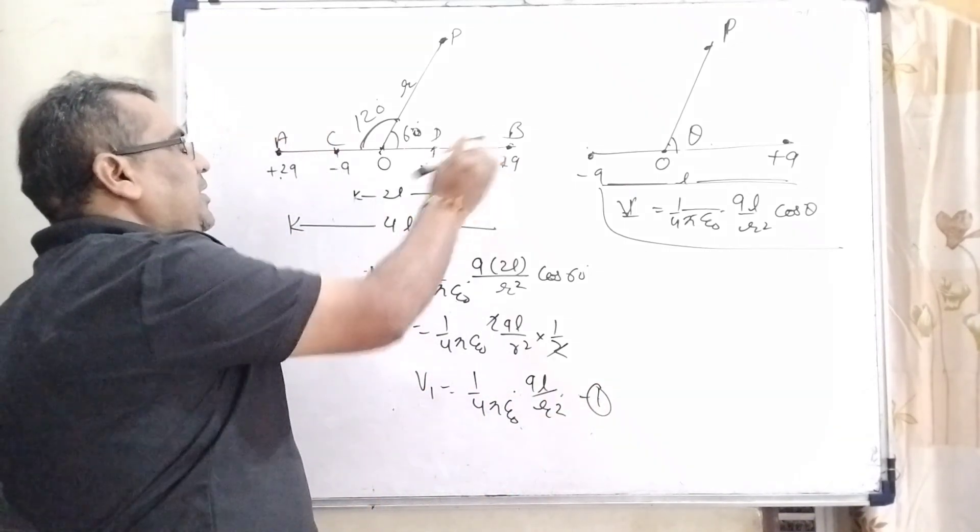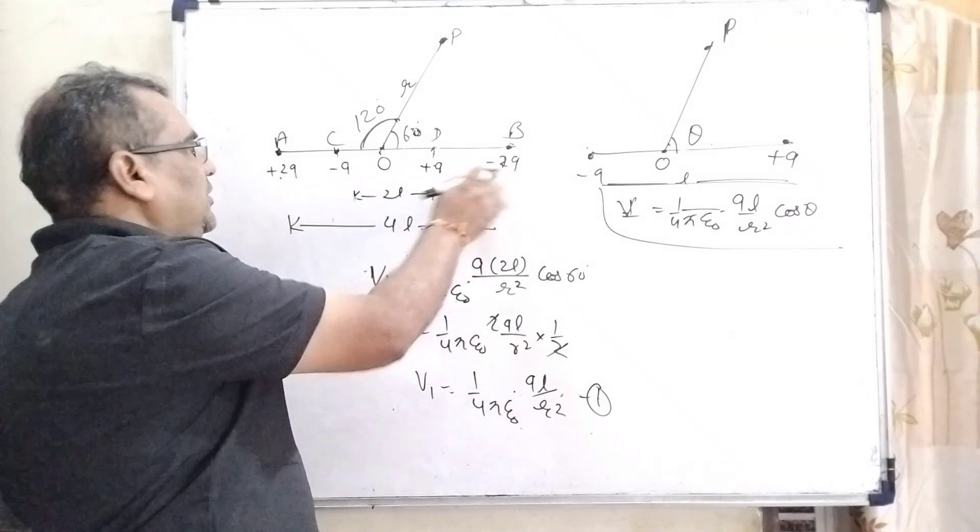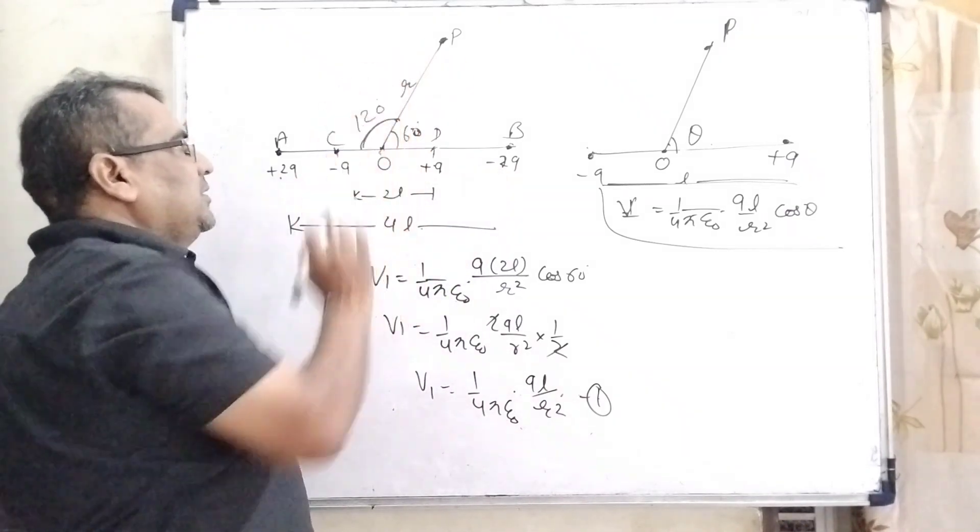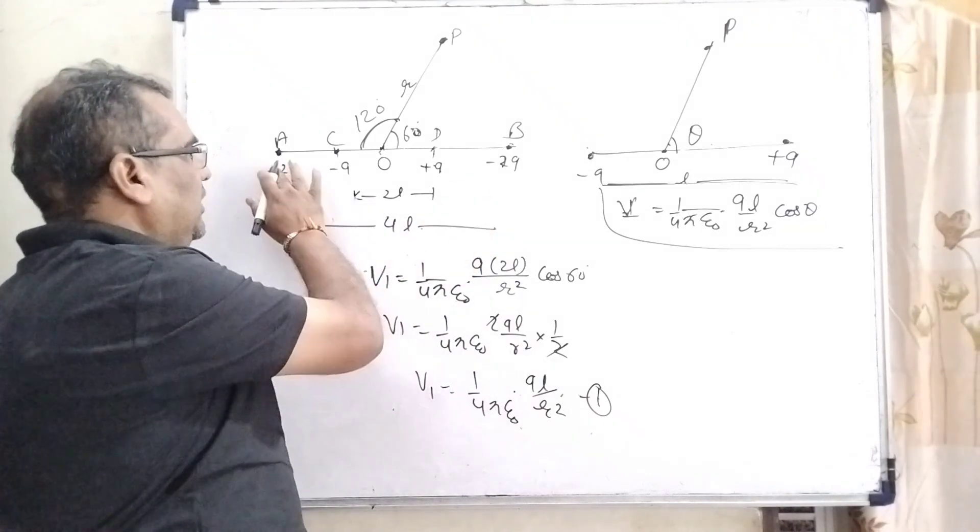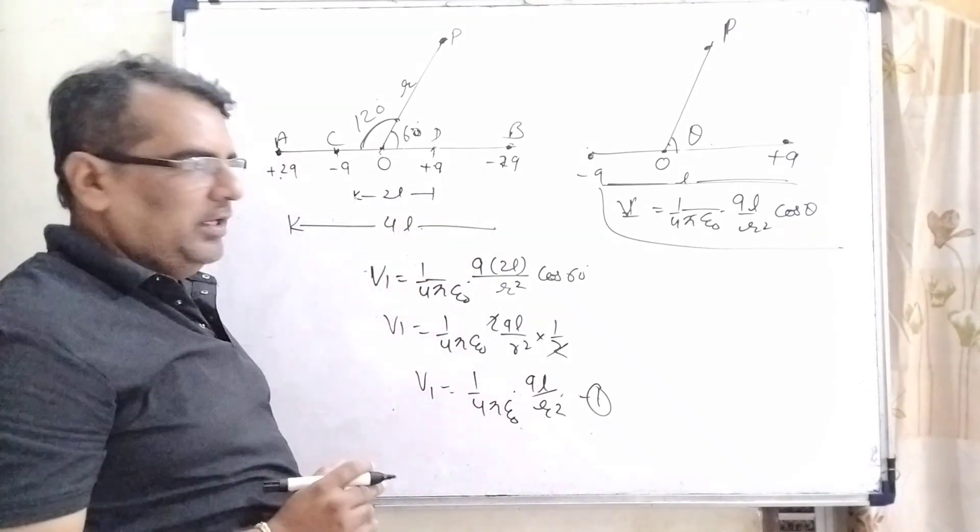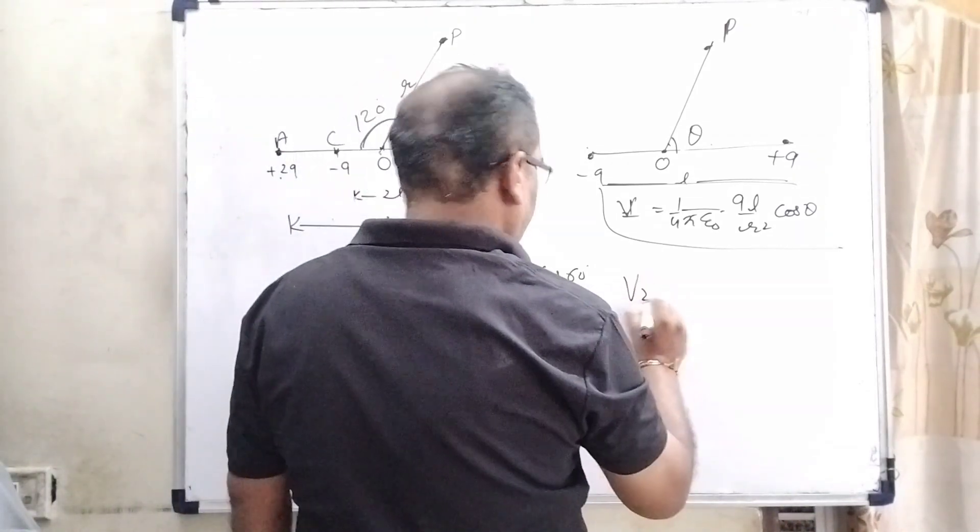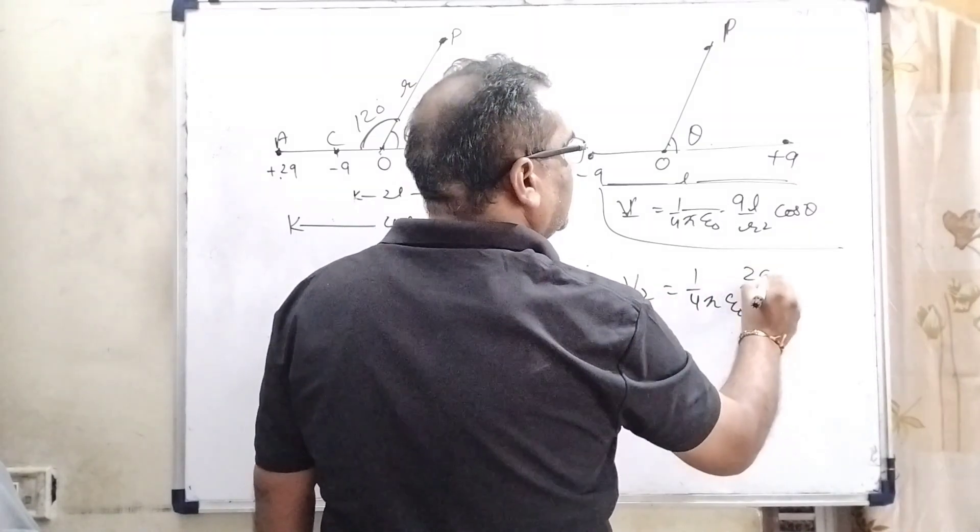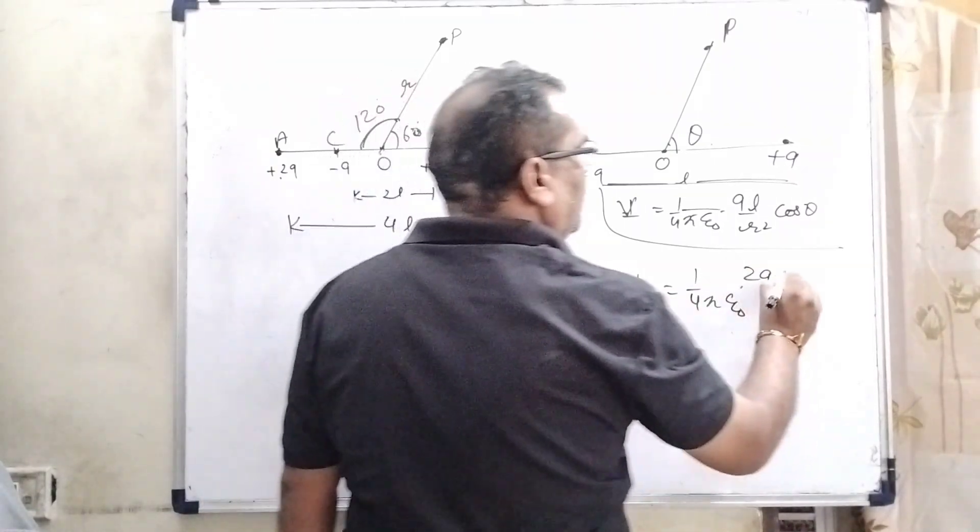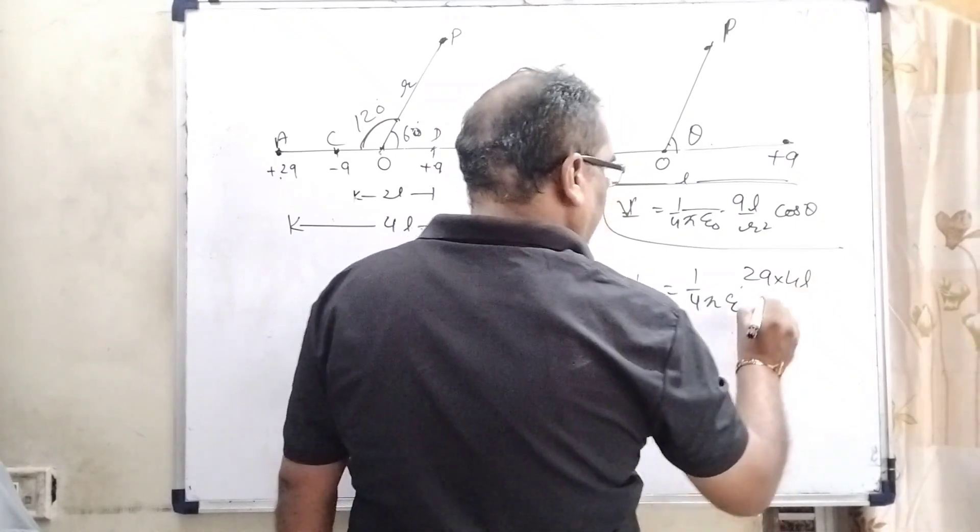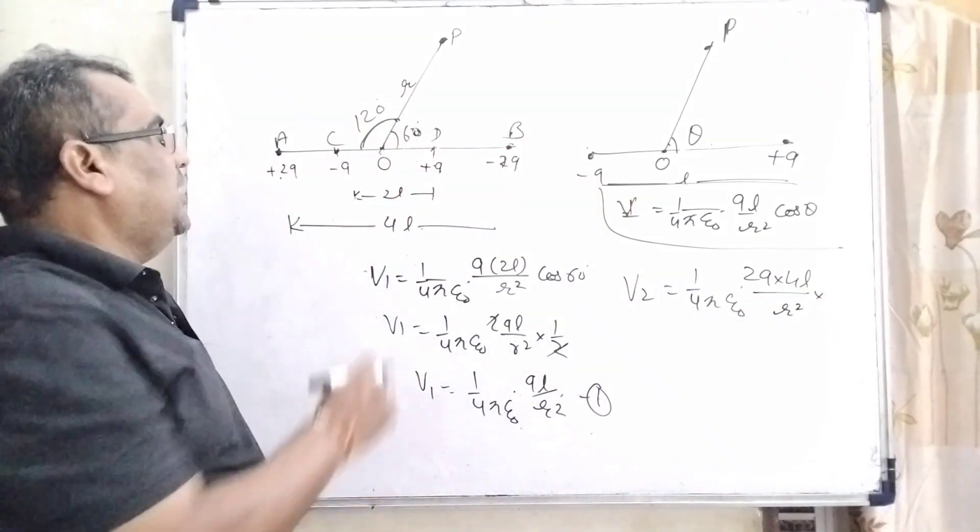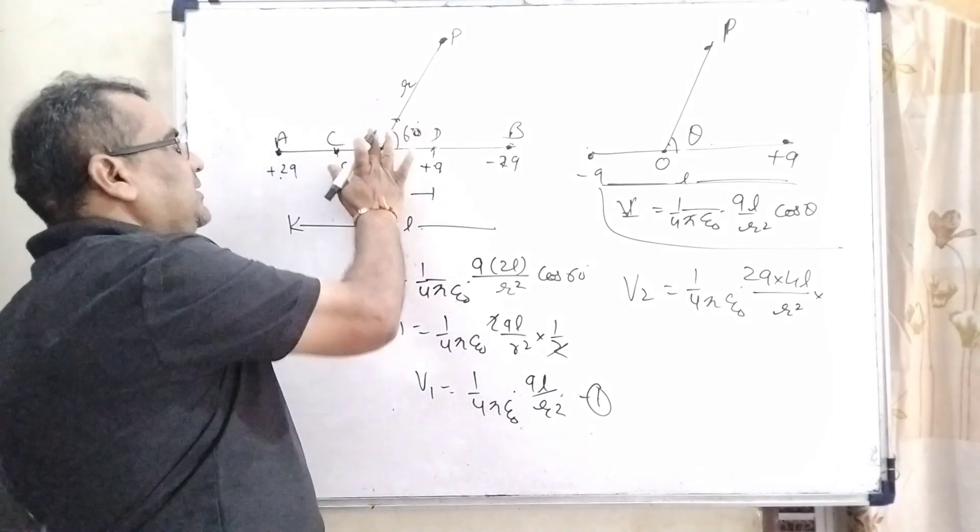Now, for the second condition AB. Here the charge given is plus 2Q and minus 2Q and from the center the distance is same but here the dipole length is 4L. So, V2 equals 1 upon 4 pi epsilon 0. Here charge is 2Q and length is 4L and R square and cos theta.